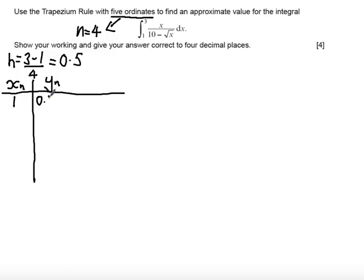When we put x equals 1 into our function, we get an answer of 0.111111. I recommend, since this is going to ask you to work to four decimal places, that you work to at least six decimal places in your working.